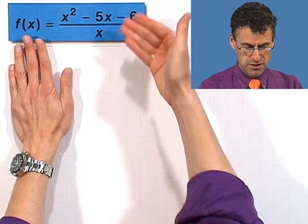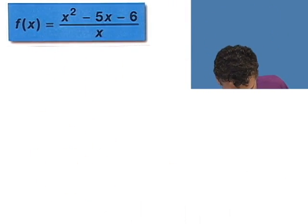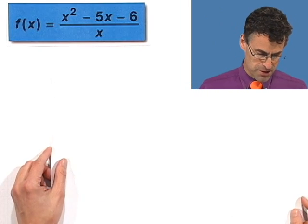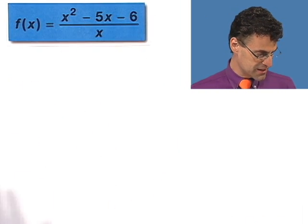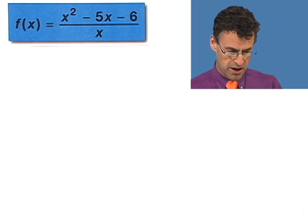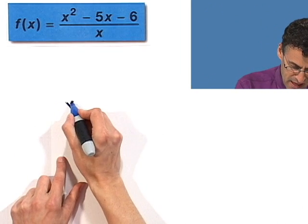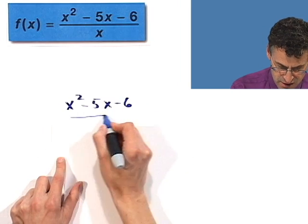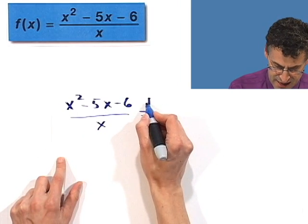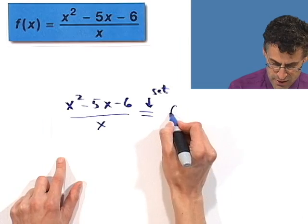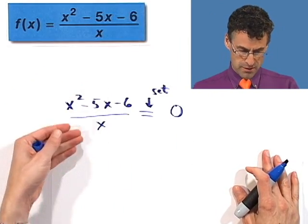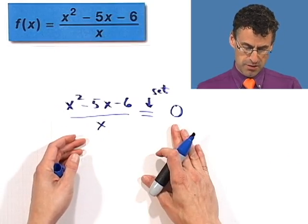Here's an example of a rational function, a polynomial divided by a polynomial, and suppose you want to find the zeros of this rational function. What you do is you set this thing equal to zero and you solve. So you set x squared minus 5x minus 6 all over x, you set that equal to zero and you solve. Now when you have a rational function, basically a fraction, a ratio, equal to zero...